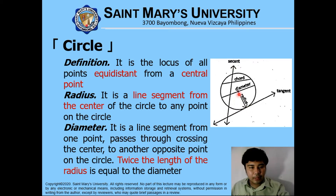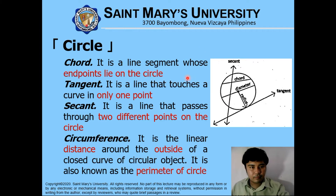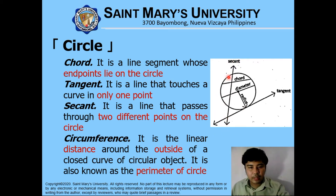The diameter is a line segment from one point, passing through the center, to another point on the circle itself. The diameter is twice the length of the radius. A chord is a line segment whose endpoints lie on the circle. A tangent is a line that touches a curve at only one point. A secant is a line that passes through two different points on the circle. The circumference is the linear distance around the outside of the closed curve of a circular object, also known as the perimeter of the circle.